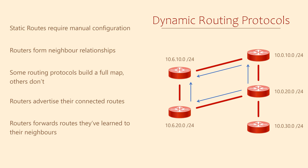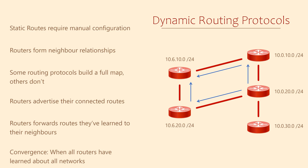Convergence is the term we use when the network has finished learning about all the routes. After the network has converged, routers continue to advertise their networks — this is their way of saying they're still here.